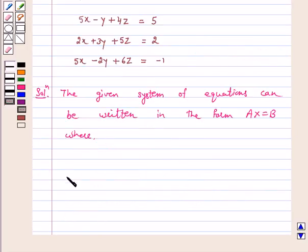A equals the matrix with first row 5, minus 1, 4; second row 2, 3, 5; third row 5, minus 2, 6.